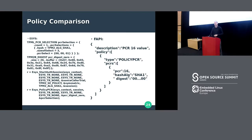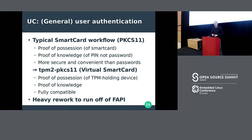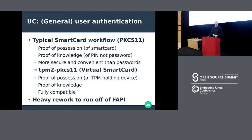The first consumers of the Feature API are the extended TPM tools, and the next is the virtual smart card project. Instead of a physical smart card, the idea is to provide a virtual smart card on your laptop — proof of possession by possessing the laptop, plus second-factor proof of knowledge via PIN. This requires a fully compatible PKCS11 implementation backed by the TPM. There's currently heavy rework from an ESAPI-based implementation to a Feature API-based one, specifically to utilize the key store and eventually support more advanced policies restricting key usage.